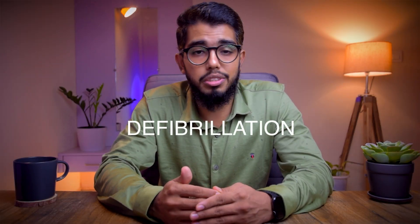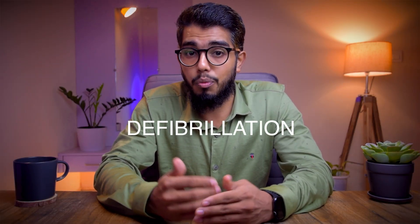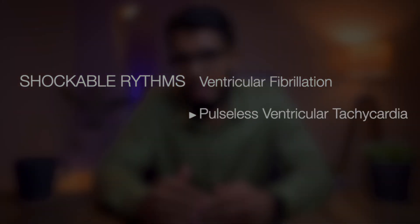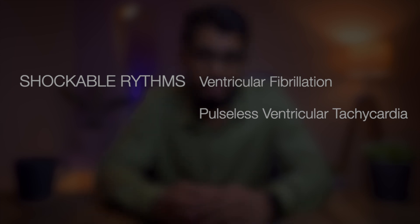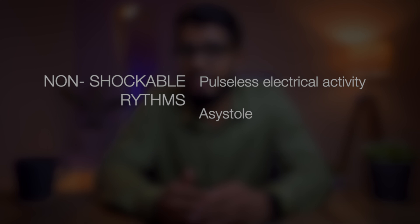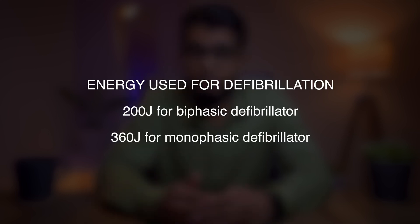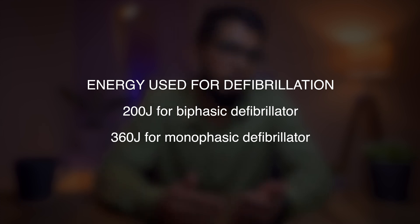Defibrillation is used in cardiac arrest with a shockable rhythm. The shockable rhythms are ventricular fibrillation and pulseless ventricular tachycardia. The non-shockable rhythms are pulseless electrical activity and asystole. The energy used is 200 joules for a biphasic defibrillator and 360 joules for a monophasic defibrillator, or just use the maximum energy level available in your defibrillator.